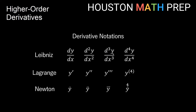Our third derivative, if we differentiated a third time, looks like d³y/dx³. The fourth derivative is d⁴y/dx⁴. These have nothing to do with cubing or taking something to the fourth power — this is just how in Leibniz notation we designate a higher order derivative.